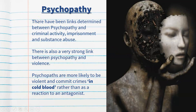There have been links determined between psychopathy and criminal activity, imprisonment and substance abuse. Substance abuse certainly fuels the psychopath's criteria. There's also a very strong link between psychopathy and violence — psychopaths are more likely to be violent and commit crimes in cold blood rather than as a reaction. They will have no emotional connection to the victim, killing them because they are unable to feel emotions in a healthy way.